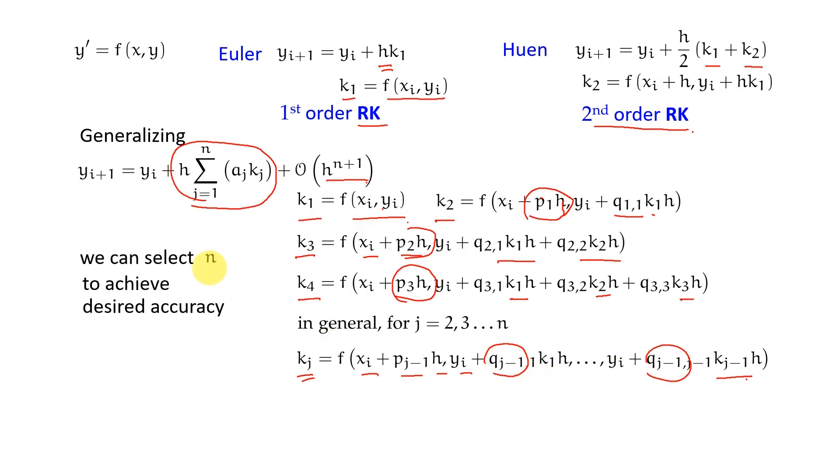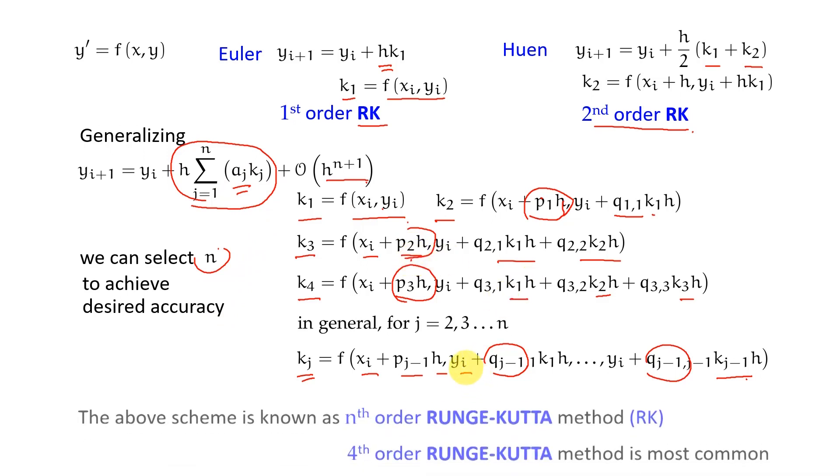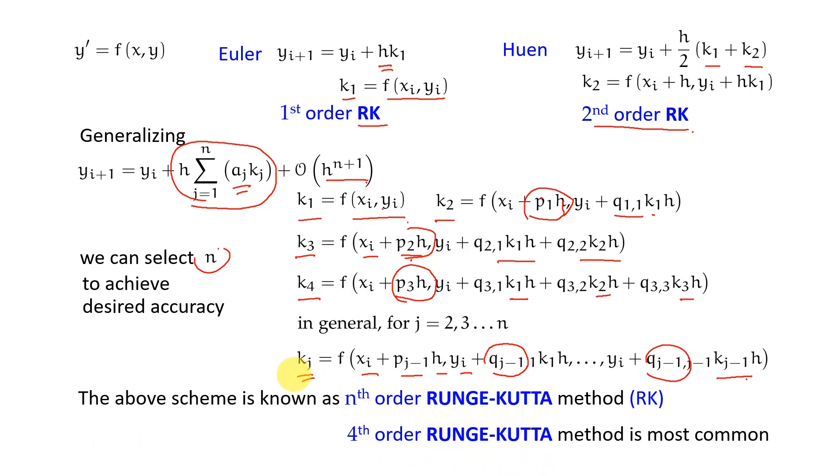In this manner we can select n in a way to achieve the desired accuracy, but we have several unknowns and we have to evaluate these unknowns such as a, p, q's etc. The nth order most generalized Runge-Kutta is not necessary for our discussion. Mostly what we use is the fourth order. In many commercial software they also use fourth or fifth order type Runge-Kutta, but they use adaptive step size, so h is not constant in most commercial ODE solvers as well as in Python SciPy based solvers.